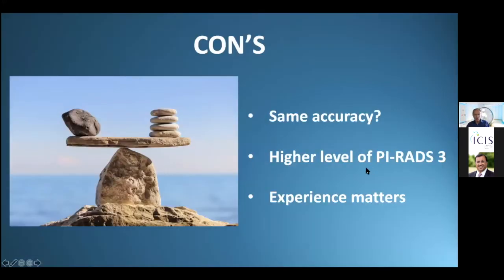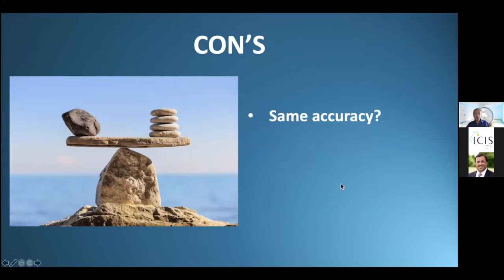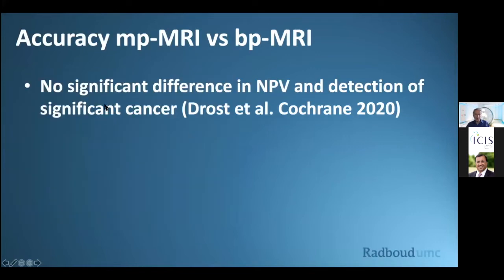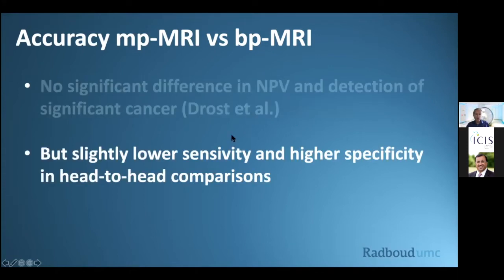What are the cons? The question is: is biparametric MRI as accurate as multiparametric MRI? Is there perhaps a higher level of PI-RADS-3 diagnoses? And what about experience? Looking at accuracy, a Cochrane meta-analysis by Drost and colleagues shows no significant difference in negative predictive value and detection of significant cancer. However, in some papers there is lower sensitivity and higher specificity in head-to-head comparisons of multiparametric versus biparametric MRI.